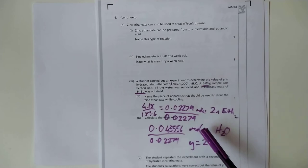That gives you, for every 1 mole of zinc ethanoate, you have got 2 moles of water. Job's done. Bye-bye. Thanks for listening.